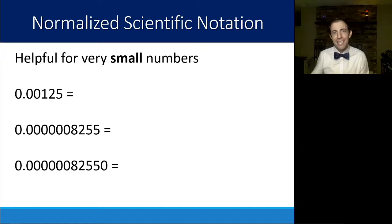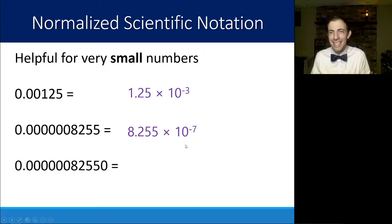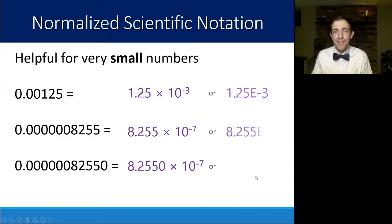Same thing for small numbers, only the big difference here is, instead of using positive exponents, we use negative exponents. So here, this 0.00125 turns into 1.25, some number between 1 and 10, times 10 to the negative 3rd. We move the decimal three places. We can do this down below as well. This number here turns into 8.255 times 10 to the negative 7th, because we move the decimal seven places. This number down below is actually exactly the same value. There's just an extra 0 here, which indicates that that number must be significant. Think back to your chemistry days. So here, we would just hold on to that 0, because there was a reason that it was presented before. There's a reason that it's presented now. Again, we can use this E notation if we want to take the place of the times 10.